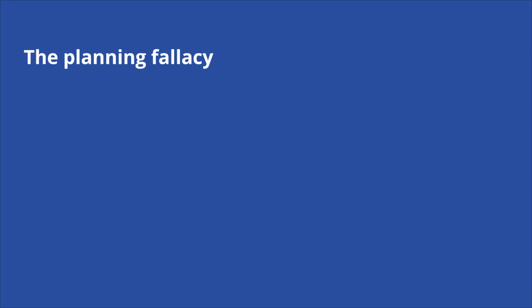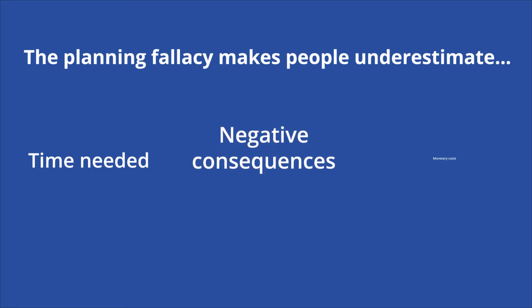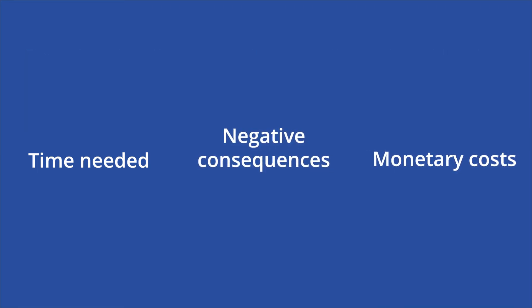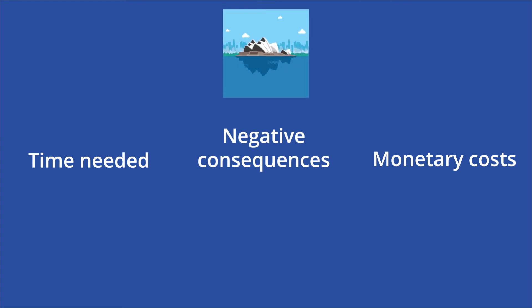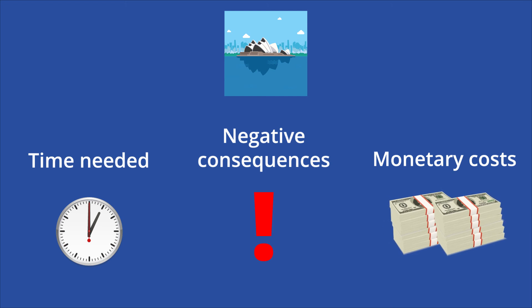In 2003, Daniel Kahneman and new research partner Dan Lovallo revisited the idea of the planning fallacy and discovered that people not only underestimate the amount of time they will need to finish certain tasks, but also underestimate the negative consequences and monetary costs of doing a given task. For example, the Sydney Opera House was originally scheduled to be finished in 1963. However, in reality, the building's construction took an extra decade and cost nearly a hundred million dollars more than expected. Despite the increased time and money put into the project, the finished Sydney Opera House still ended up being smaller and less grand than originally planned.